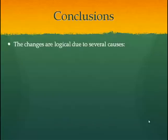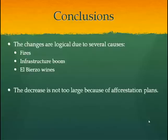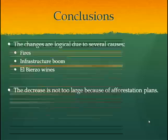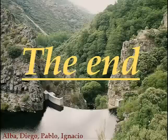Conclusions. To sum up, we have obtained a slight decrease of the forest cover throughout the study area. From our point of view, the changes are logical due to several causes. The principal reasons for that decrease are fires, which are highly dangerous for our forests. The second reason is the infrastructure boom, including new roads and city growth. Bierzo wines have also increased their prestige and expanded their vineyard size. On the other hand, the Castilla y León administration has run different afforestation plans which have helped slow down this loss. And that's all — thank you for your attention.